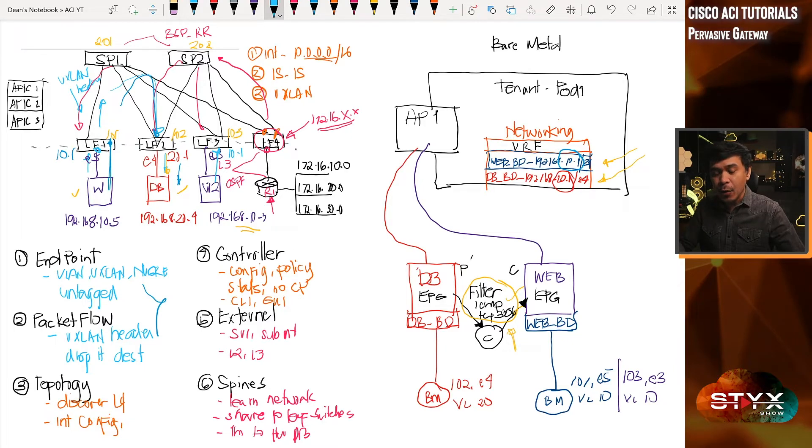Yes, believe it or not, 192.168.10.1 is available in this case in leaf1, leaf3, and if we have web servers connected to leaf2, 10.1 default gateway is also available in leaf2. This is what we call pervasive SVI. And we're going to talk about how this happens in a bit.